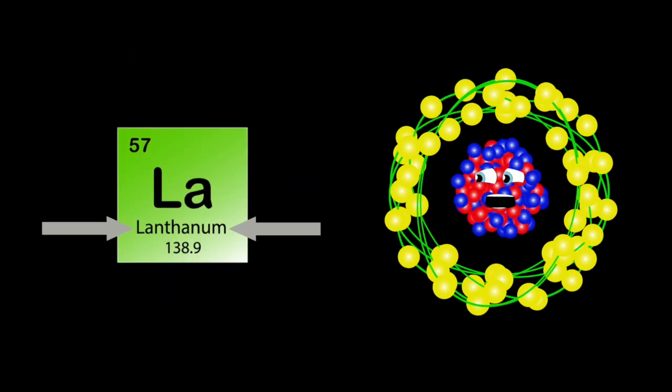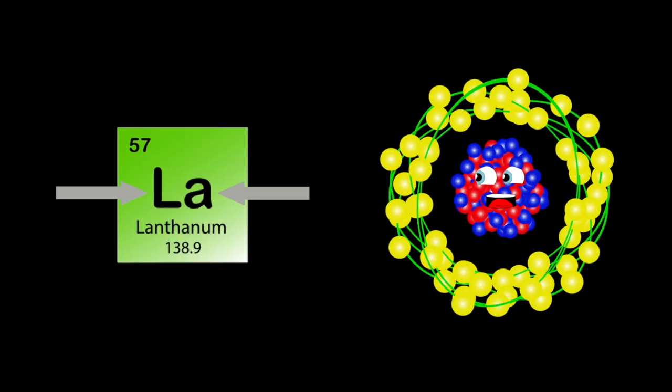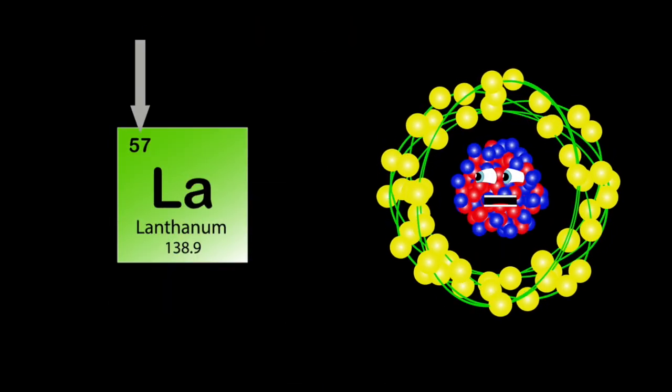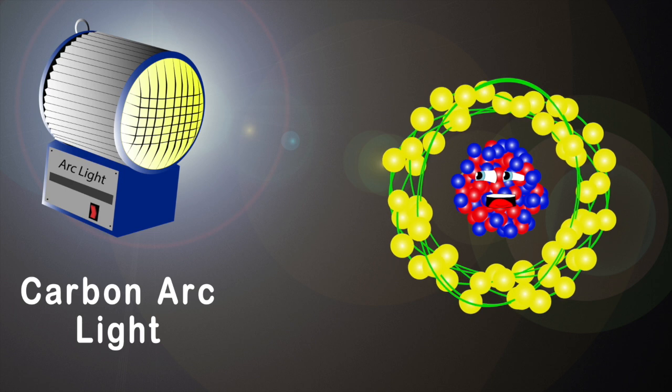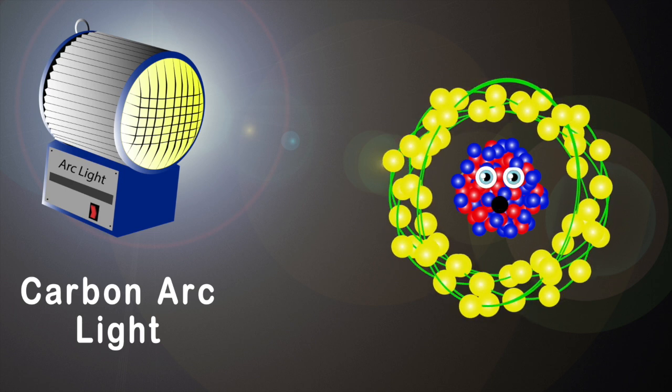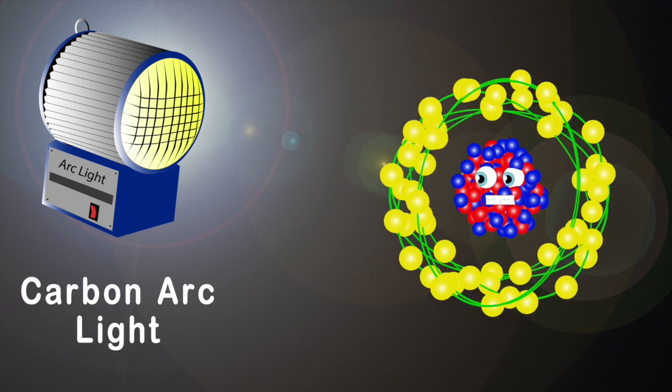I'm lanthanum, my symbol is LA, my atomic number's 57 and atomic mass is 138. I'm mostly used to make carbon arc lights, which are used for studio lighting for a motion picture show.